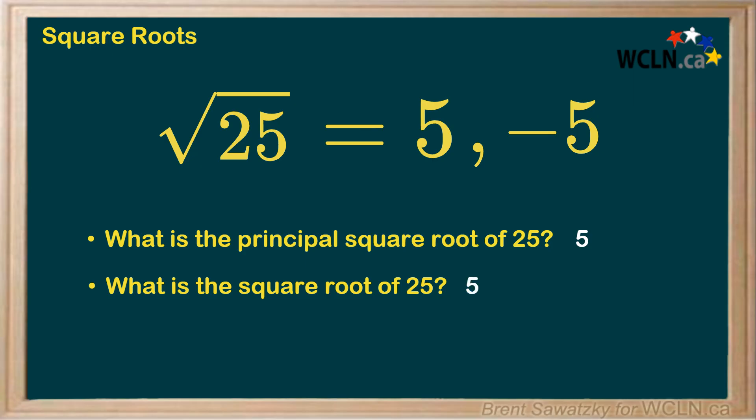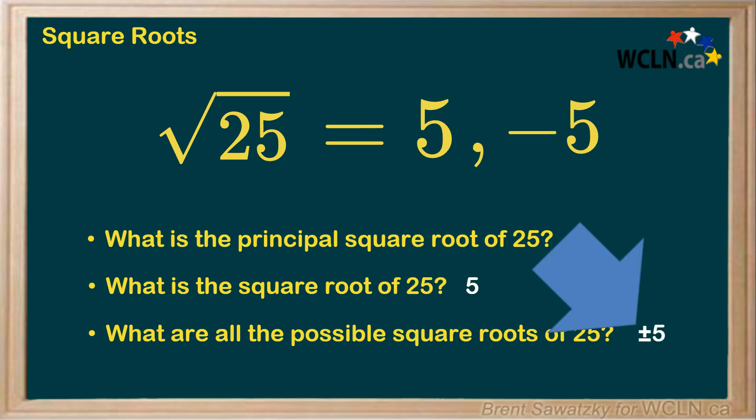But if you're asked for all the possible square roots of 25, that means they're looking for more than just the principal square root. So you would say positive 5 or negative 5, which can also be written as plus or minus 5. This symbol here indicates that we're including both the positive 5 and the negative 5 in our answer.